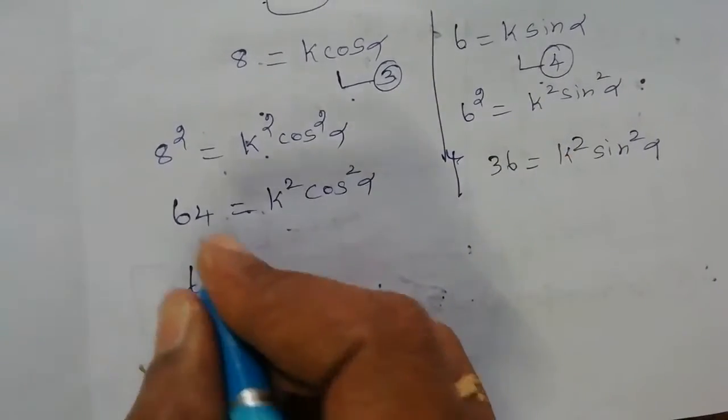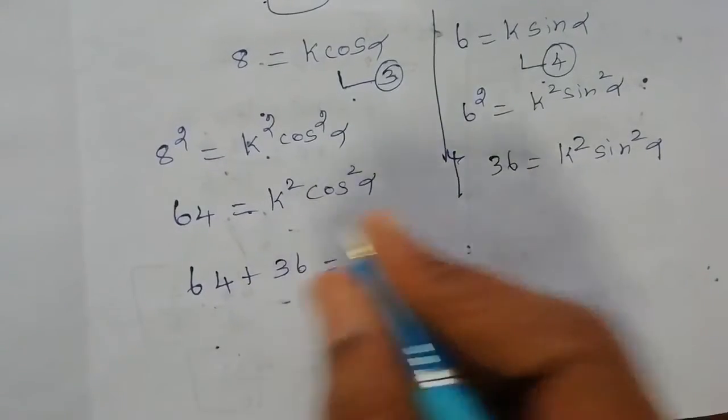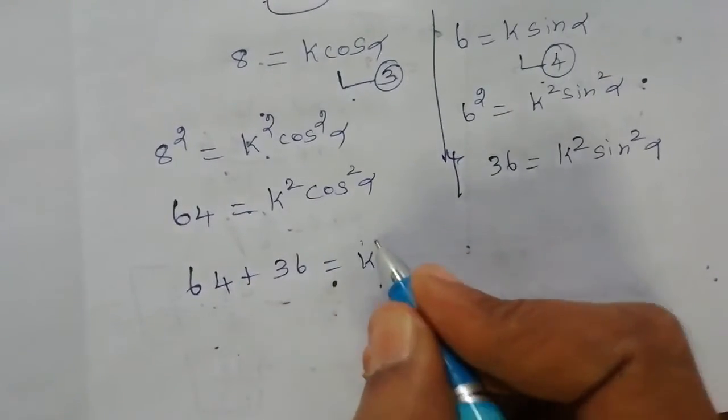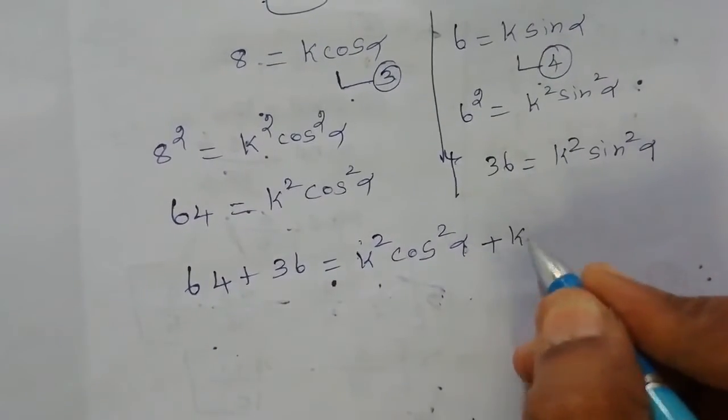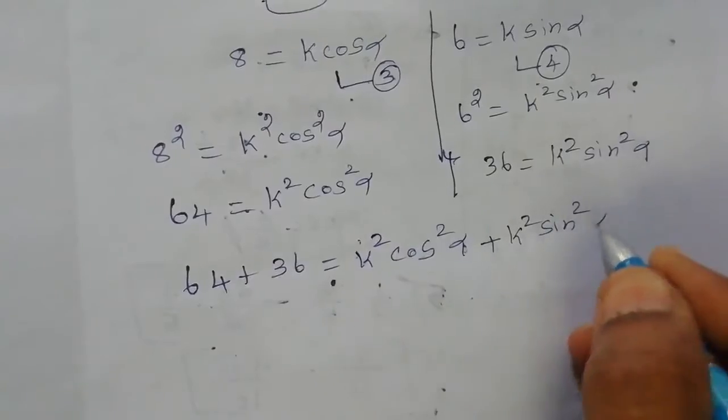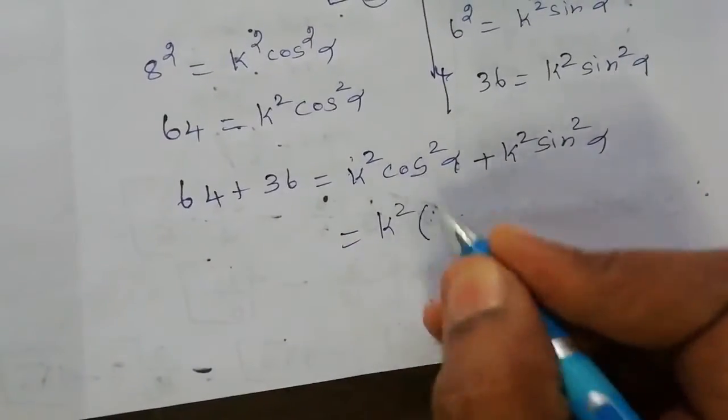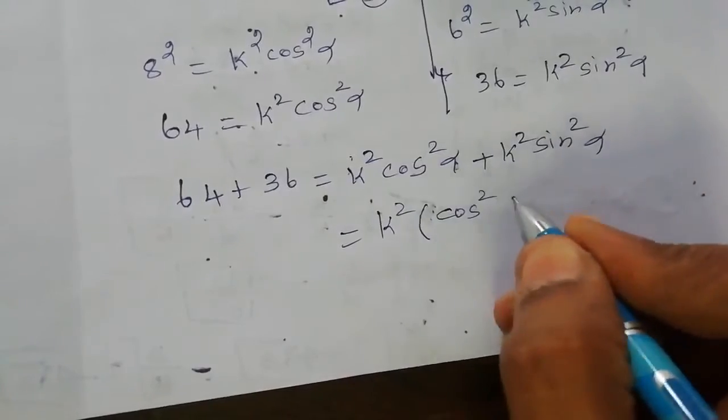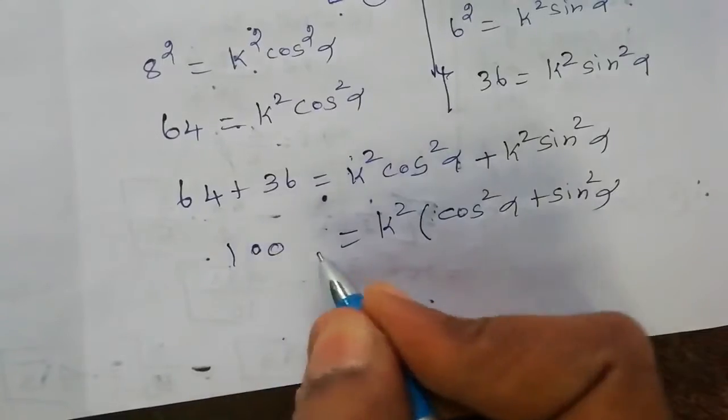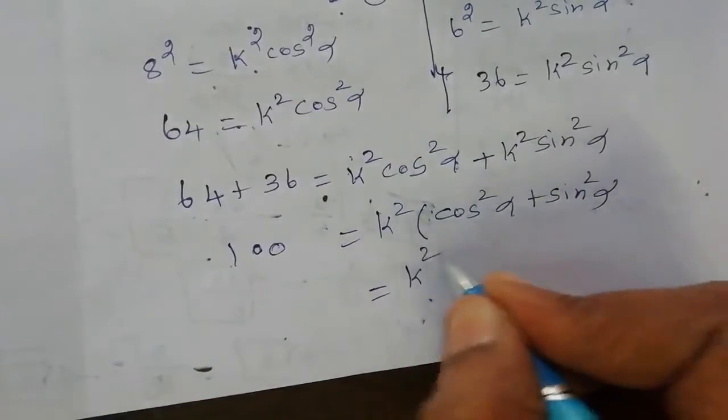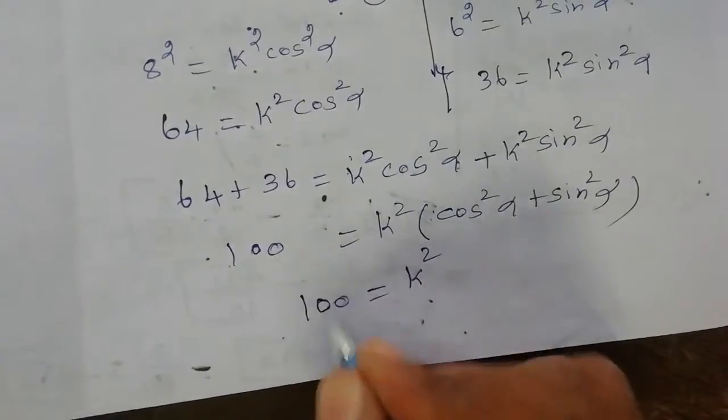We will add these two. Left side add 64 plus 36. Right side add k squared cos squared alpha plus k squared sin squared alpha. Equal to k squared common, cos squared alpha plus sin squared alpha. This equals 100. Equal to k squared, sin square plus cos square value 1. K squared is equal to 100, so k equals 10.